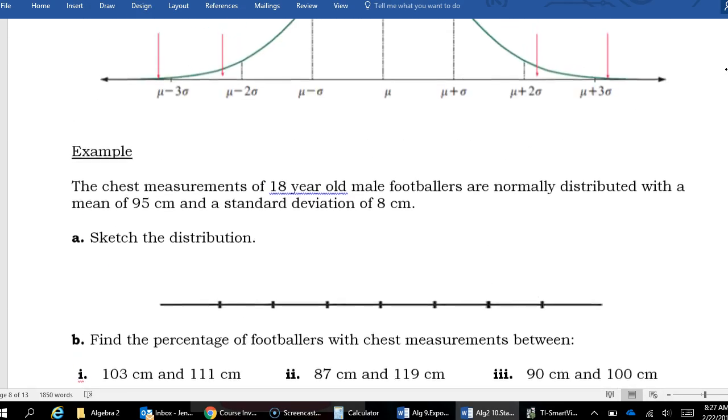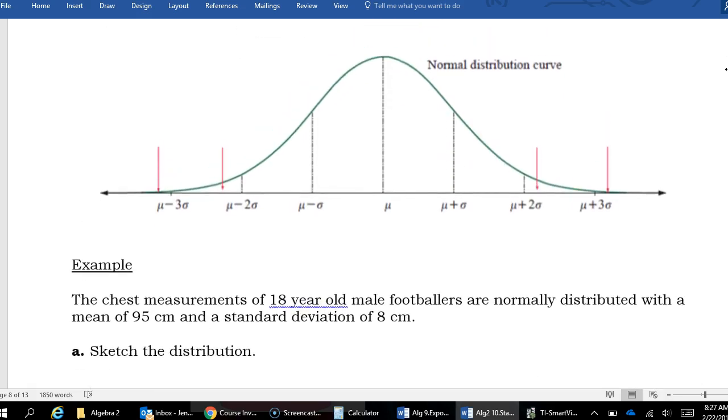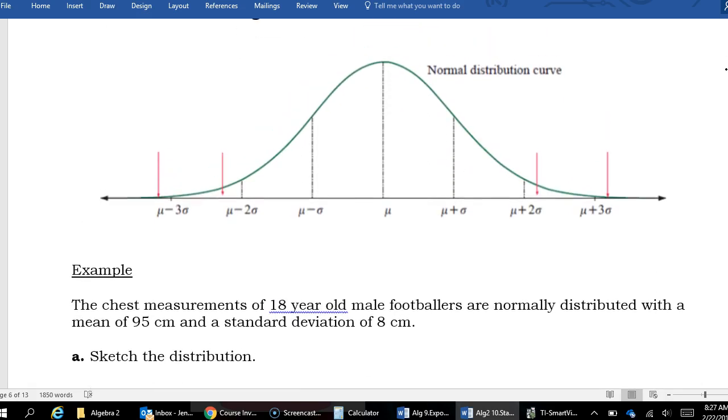If we go back to 10.3, hopefully you recall that these intervals here, this was 34% and 34%. And that's why if we add those together, we're getting 68% because that's 1 plus and 1 minus standard deviation.